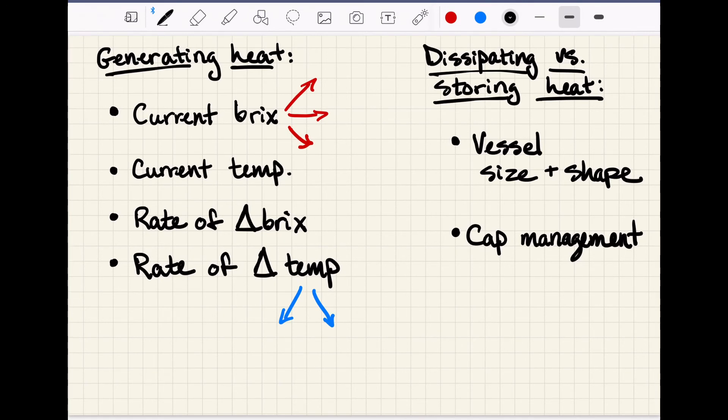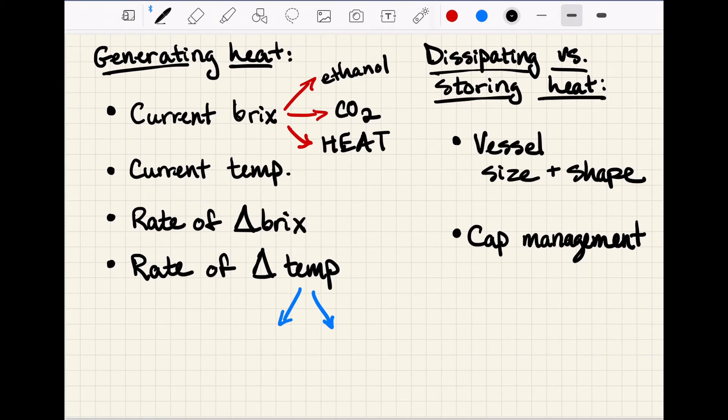When it comes to figuring out the risk of overheating, we need to consider a few factors. In terms of generating heat, we need to know the current bricks, because that sugar is converted to three main things: ethanol, carbon dioxide, and heat. We need to know the current temperature as our starting point. It's helpful to know how fast the fermentation is going, and we can also think about our rate of temperature change relative to both our change in bricks and our change in time.